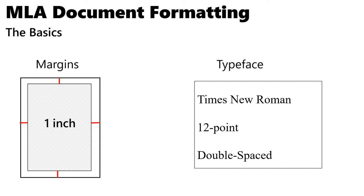One thing to watch out for when picking a font: MLA recommends that you pick a font like Times New Roman where there is a distinct difference between plain text and italicized text, and you'll see in a moment why that is important. If you have trouble setting up your MLA document formatting, I'll show you where you can get a template from the library's website so it will all be set up for you already.